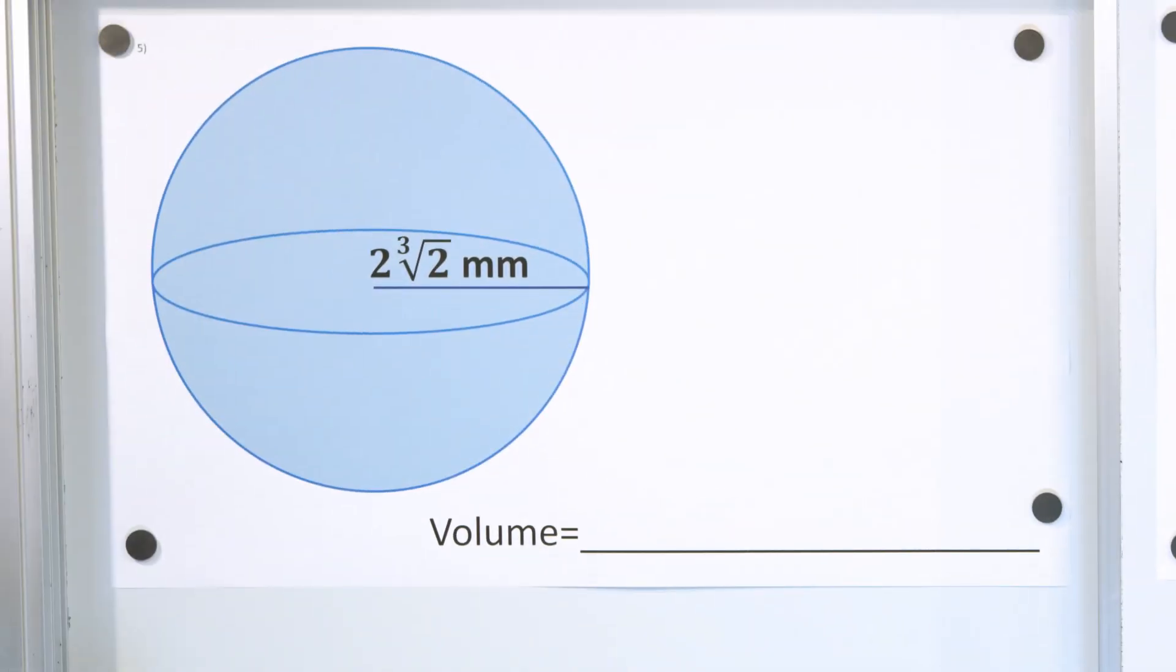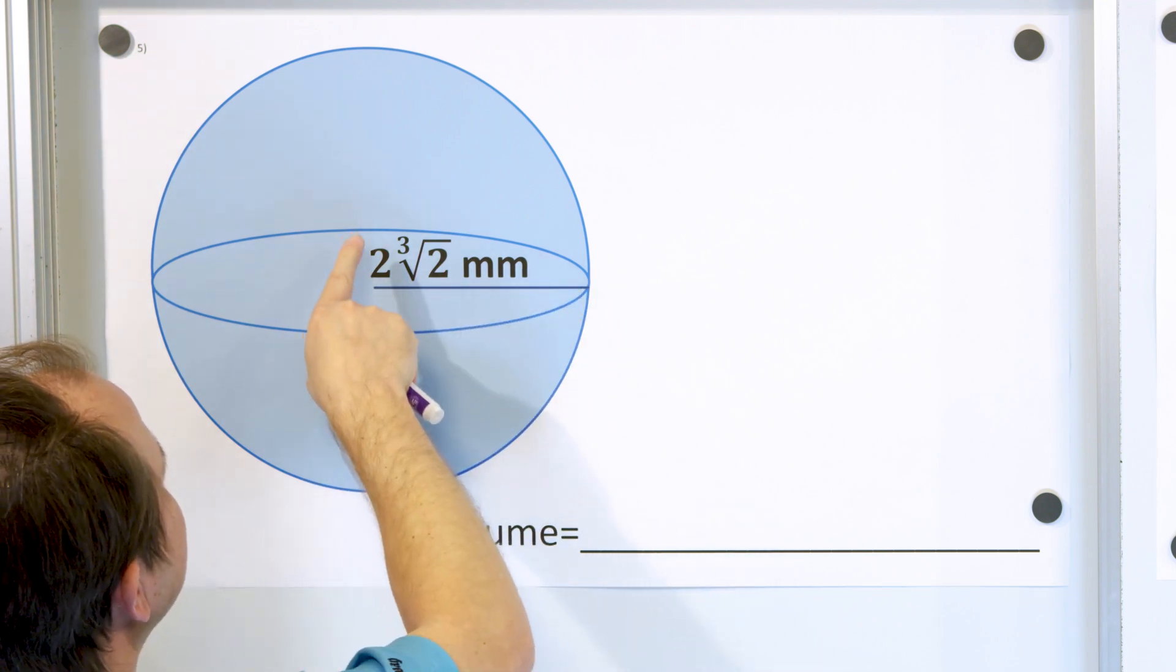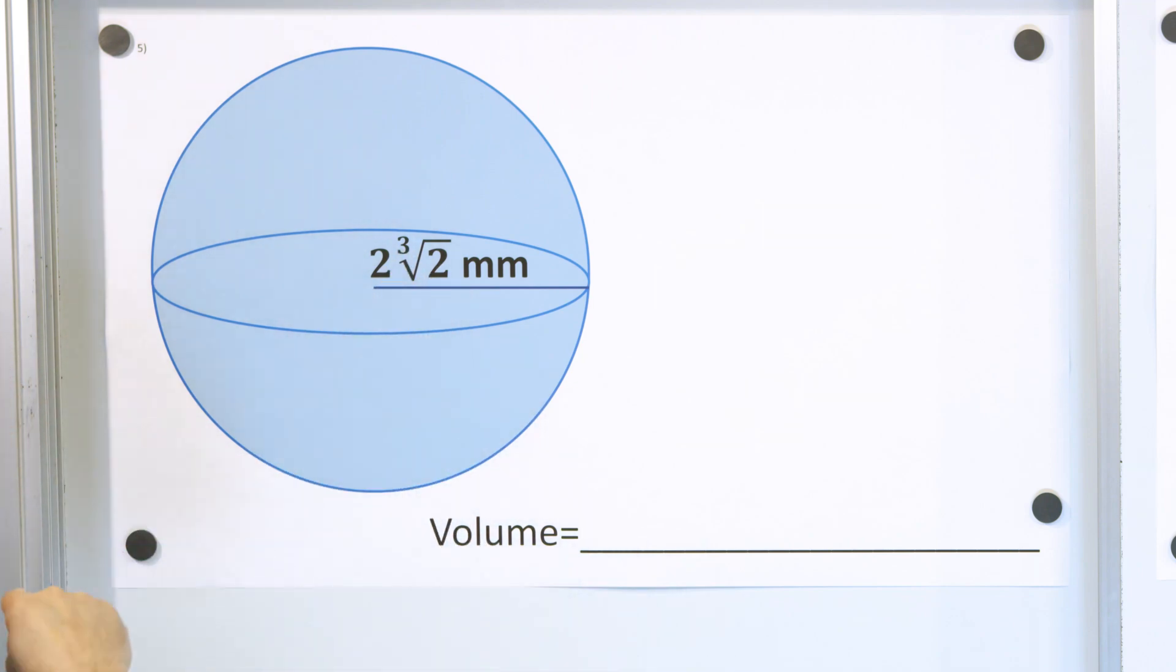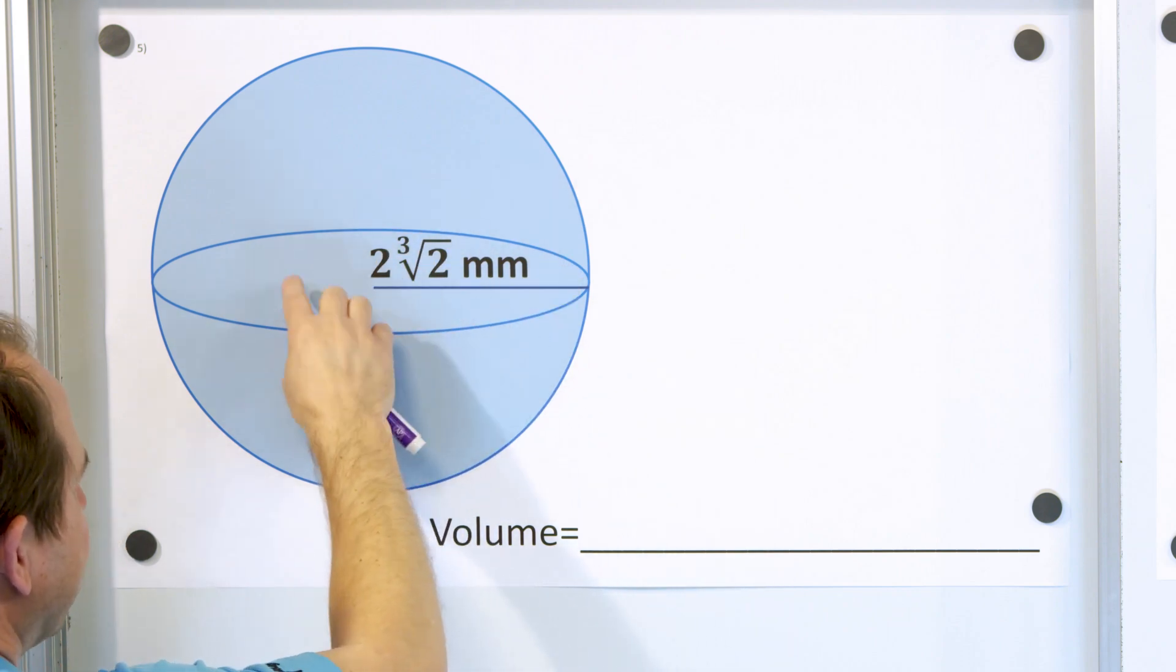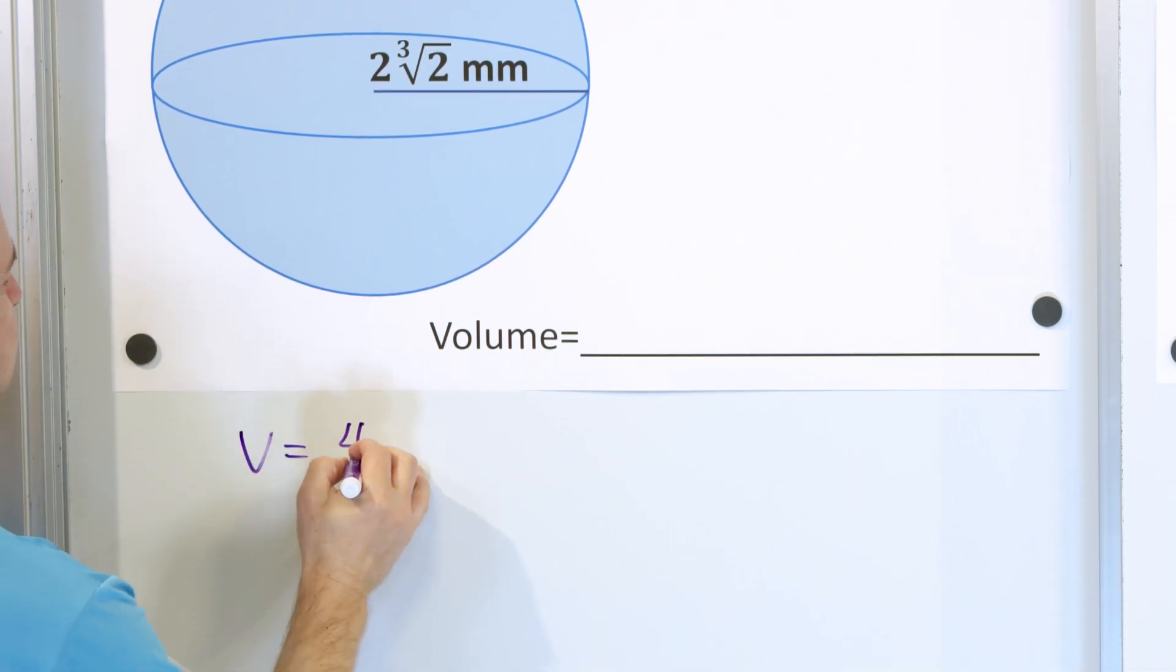Alright, here is our last problem. Here, the radius is a weird situation. It's 2 times the cube root of 2. So don't get worried if you see radicals in distances, these are just numbers. You can convert this to decimal if you wish, but of course this is the exact value. Now what's the volume of any sphere? It's four-thirds times pi times r cubed.